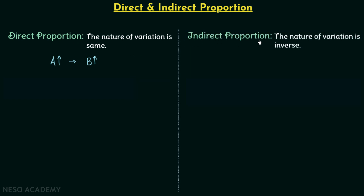Now we will move on to indirect proportion. When we have two quantities and the nature of variation of the two quantities is inverse, we say the two quantities are indirectly proportional. For example, if you increase quantity A and this results in a decrement in quantity B, we say the two quantities are inversely or indirectly proportional.